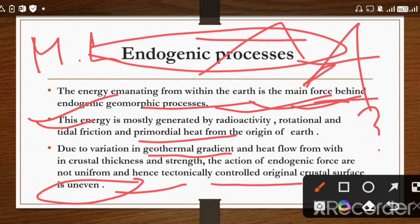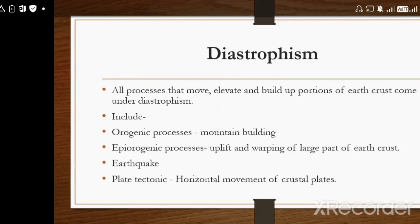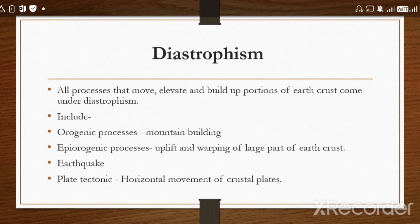Tectonically controlled — tectonic means movement of plates inside the earth, which we have already discussed in chapter four on oceans and continents. The original crustal surface is uneven due to this tectonic control.